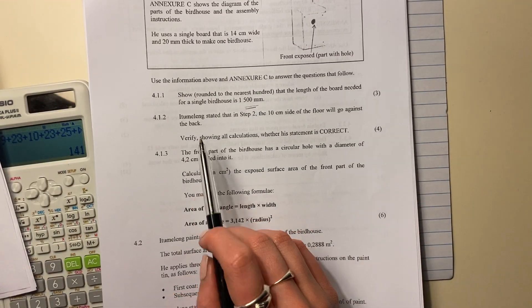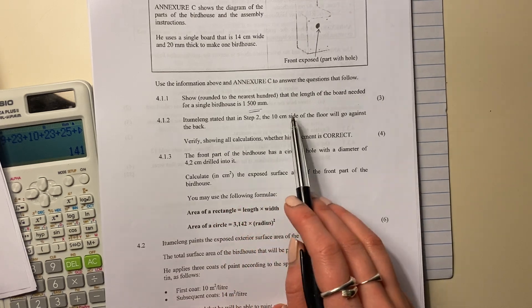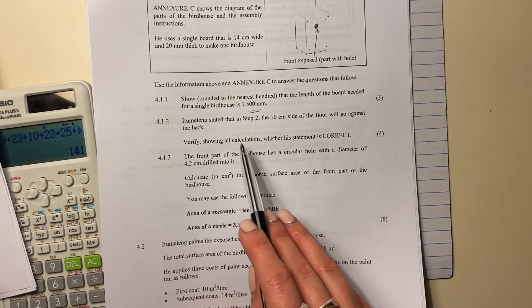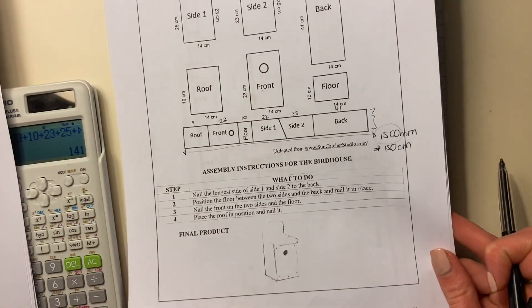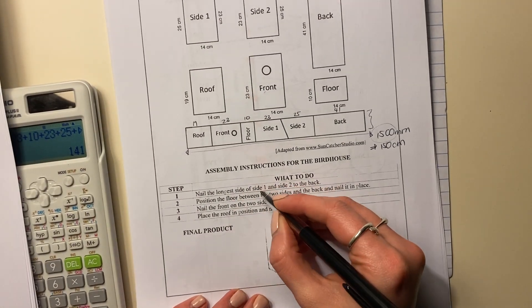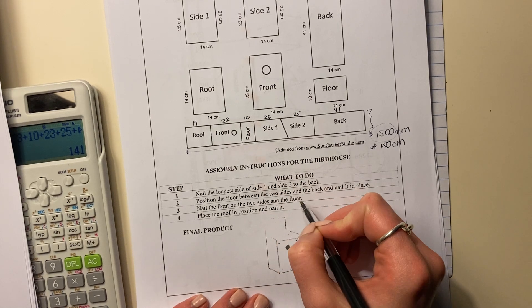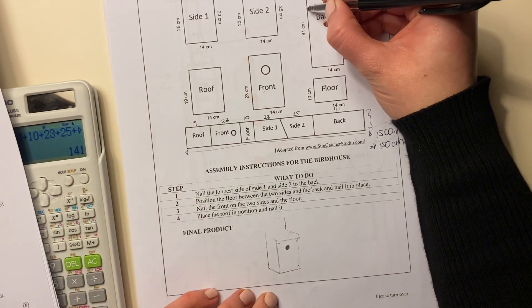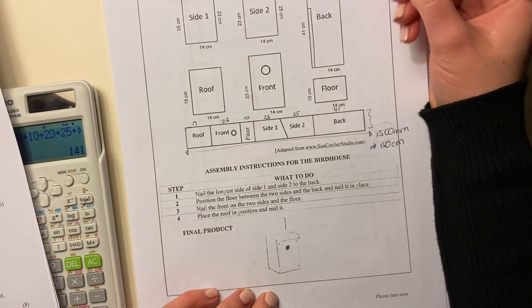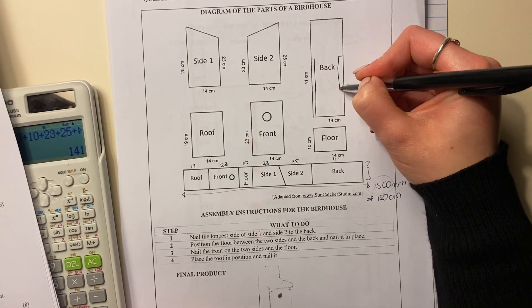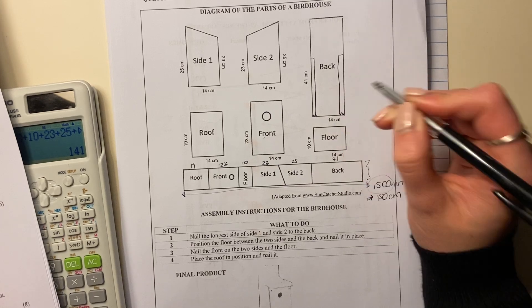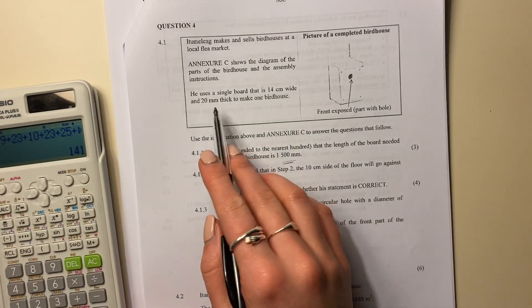Let's move on to the next question. The next question says, Itouma Ling stated that in step 2, the 10-centimeter side of the floor will go against the back. Verify, showing all calculations whether the statement is correct. So let's read over how he makes this. Firstly, it says, nail the longest side of side 1 and side 2 to the back. So we're going to take that, and we're going to take that 25-centimeter, and we're going to nail it there. And we're going to take that one, and we're going to nail it there. So obviously, it's going to take a bit of space over here. Let's figure out how much space that is. Let's see how thick these boards are.